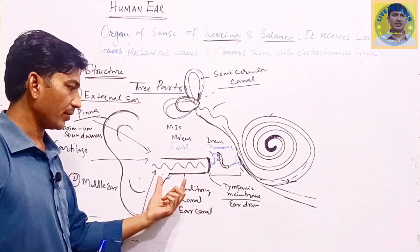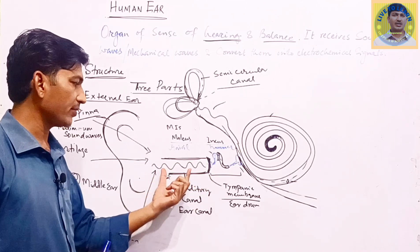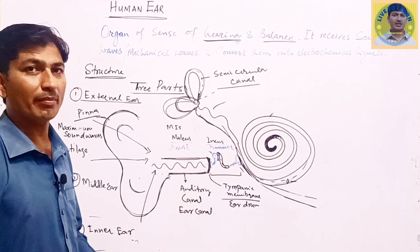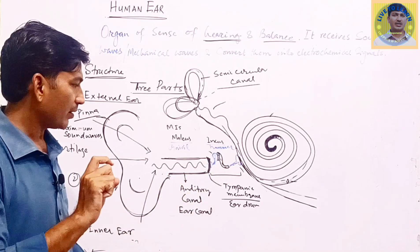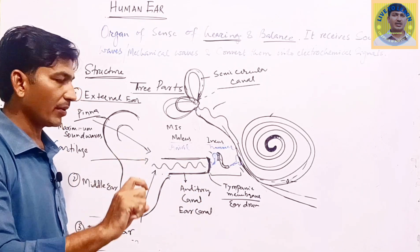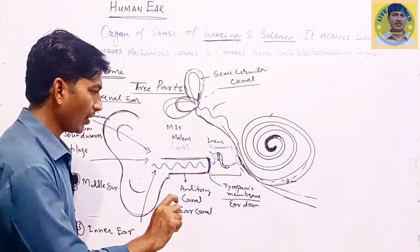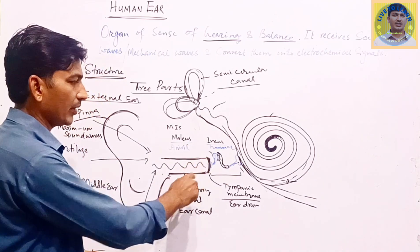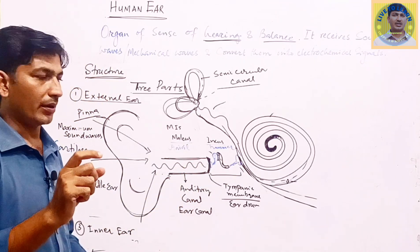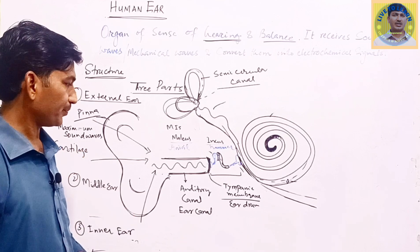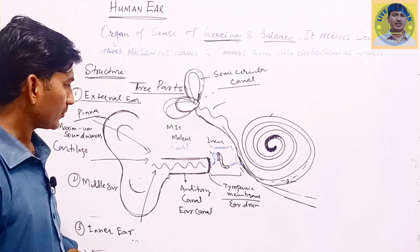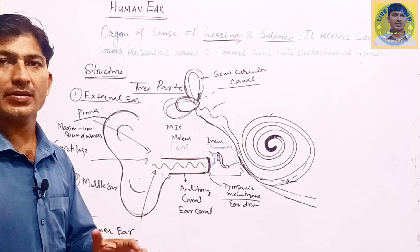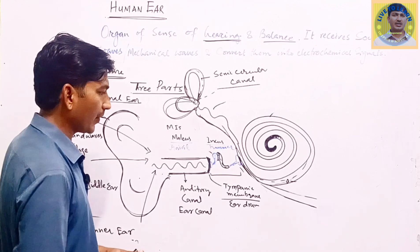It collects the maximum sound waves, transfers them into the ear canal, and when the sound waves enter the auditory canal, they strike the membrane. The waves striking the membrane produce a kind of vibration movement in the tympanic membrane. Here the external ear ends.